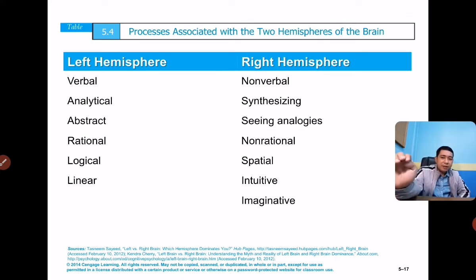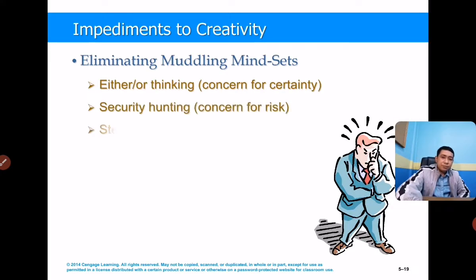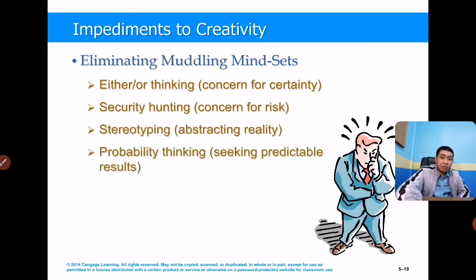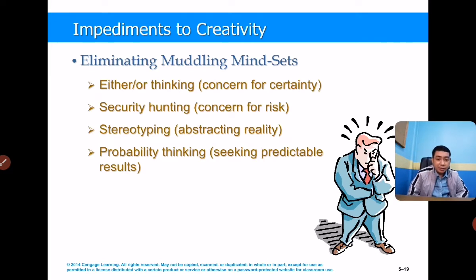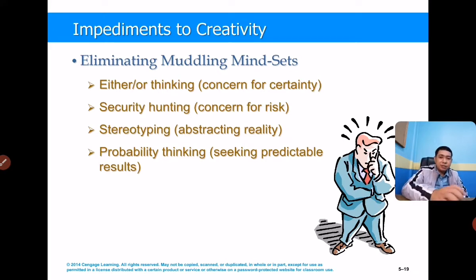The left hemisphere is on the organization side and the right hemisphere is on the creative side. The impediments to creativity include: either-or thinking, concern for certainty and security, concern for risk — though everything has risk you need to balance it — stereotyping, which means generalizing how you perceive a group of people or activities (assuming that if this happened, that will follow next), abstracting reality, and probability thinking — seeking only predictable results. These are all impediments to creativity.